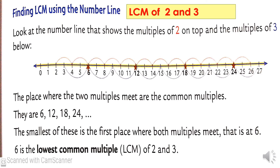Next: finding LCM using the number line. Example: LCM of 2 and 3. You can see a number line from 0 to 27. The multiples of 2 are shown on top of the number line: 2, 4, 6, 8, 10, 12, 14, 16, 18, 20, 22, 24, 26, etc. The multiples of 3 are shown below the line: 3, 6, 9, 12, 15, 18, 21, 24, 27, etc.